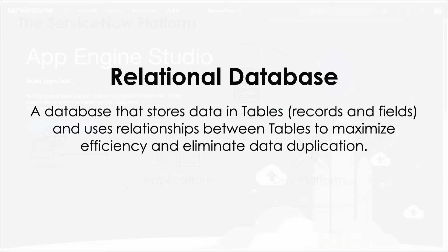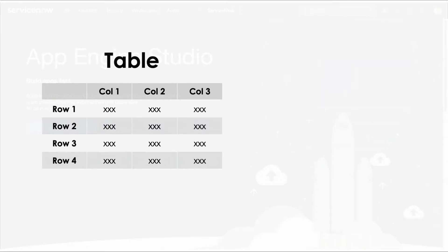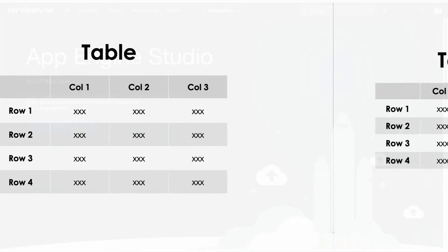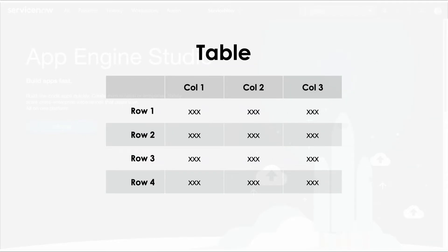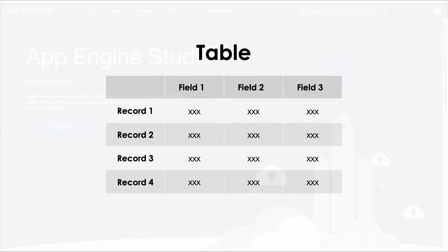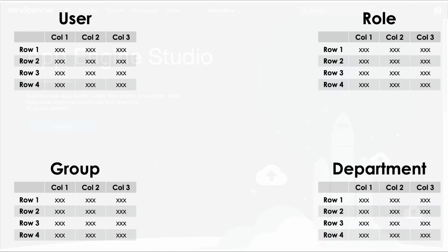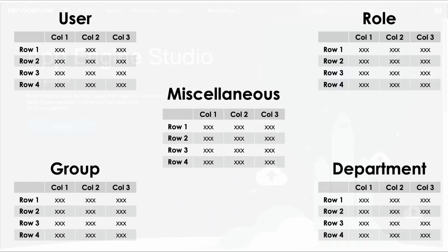When we talk about tables in a database, what we're talking about is rows and columns of data — like picture a spreadsheet. Each row in the table is called a record, and each column in the table is called a field. As a general rule, each database table should store data about only one thing or entity, so we keep things organized. There are no junk drawer database tables that just hold a bunch of miscellaneous stuff.